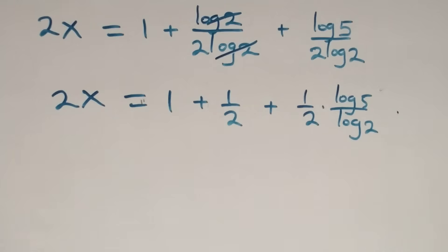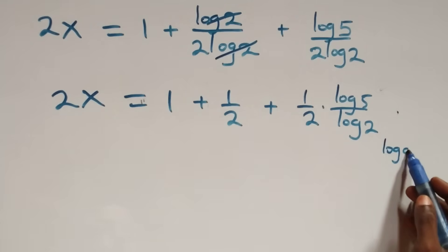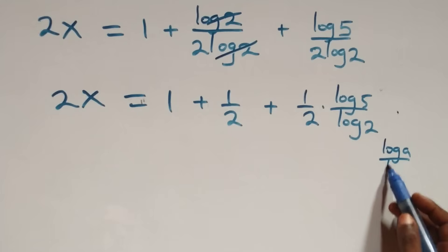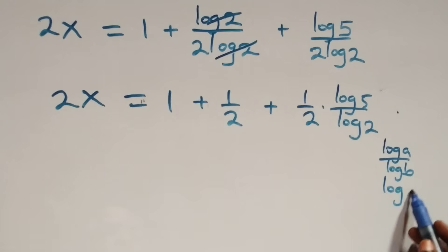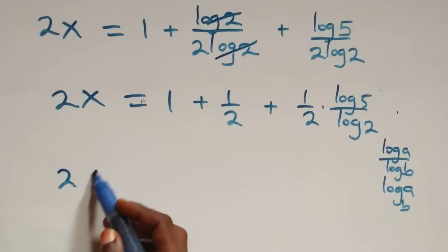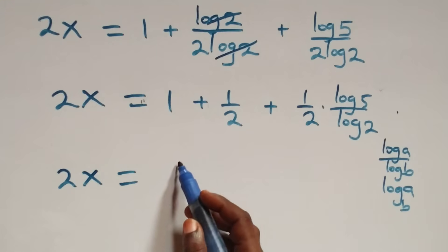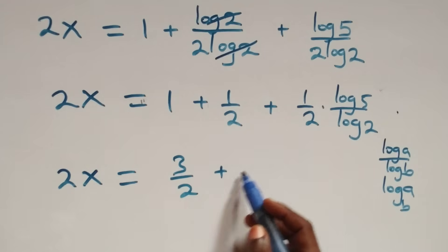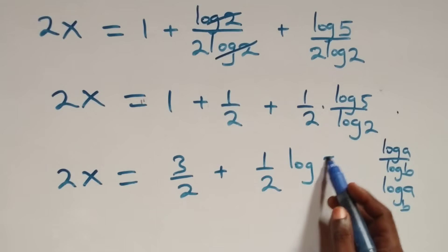Here we also apply change of base: when we have log a over log b, this is the same thing as log a to base b. Then what we have becomes two x equals to one plus one half, which is three over two, plus one half log five to base two.